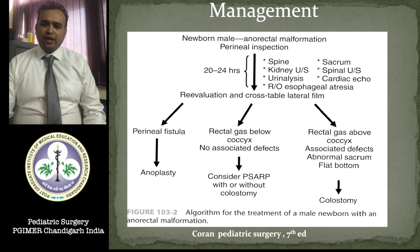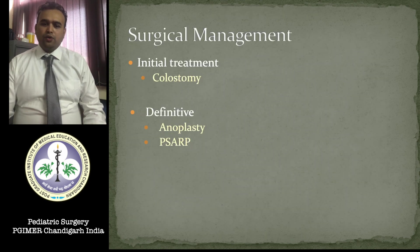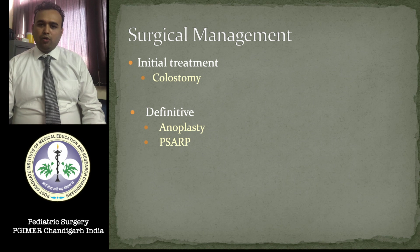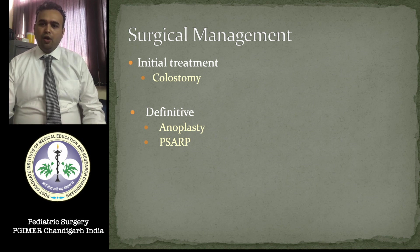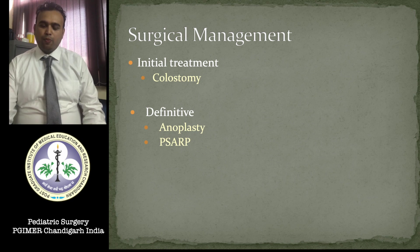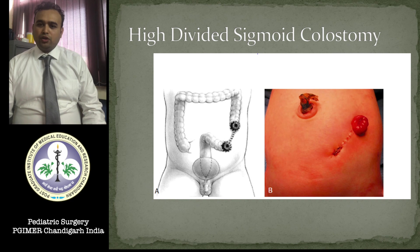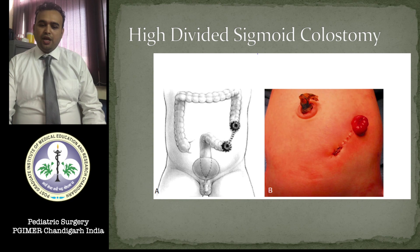Surgical management of male ARM revolves around three surgeries: an initial colostomy and a definitive procedure with either anoplasty or PSARP. 90% of male ARMs can be treated with only these three procedures. High divided sigmoid colostomy is the ideal colostomy for management of male ARM patients.